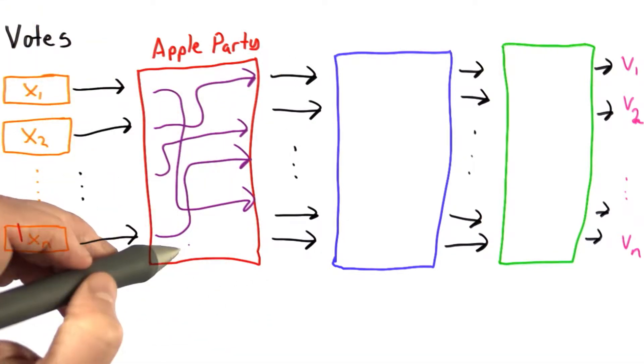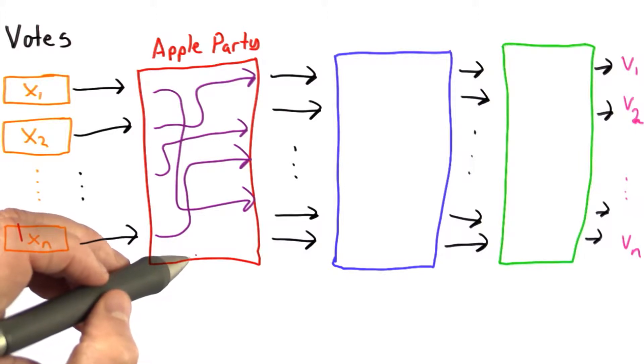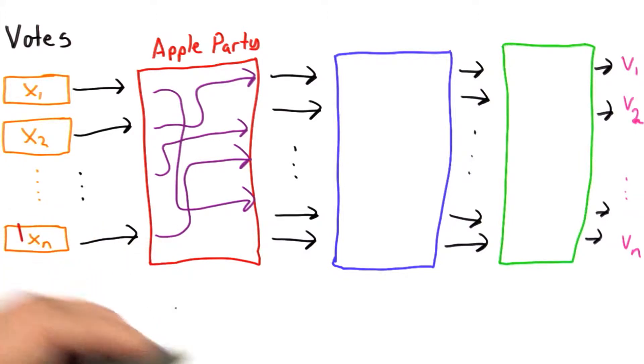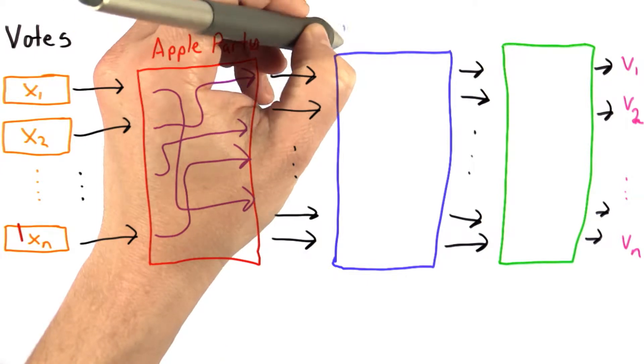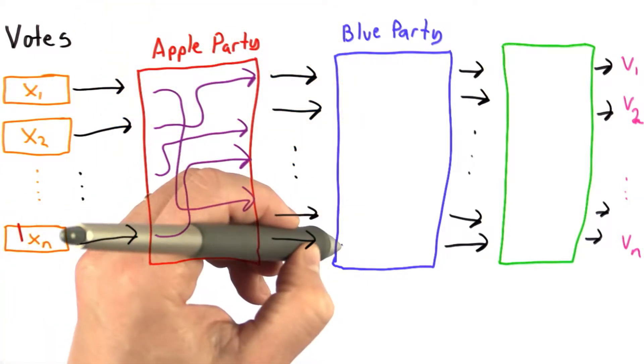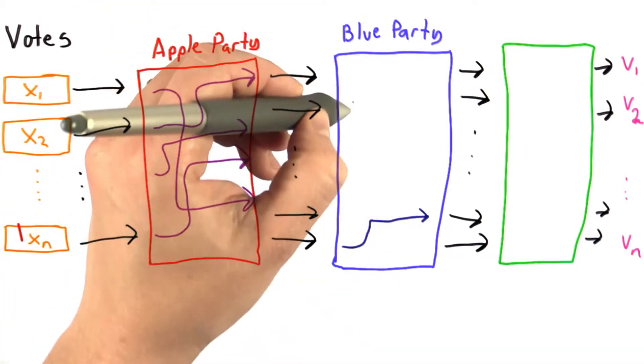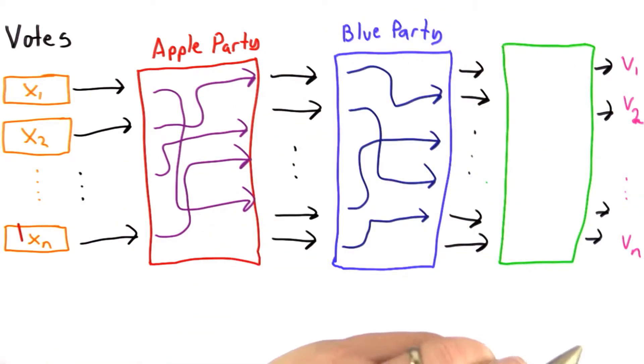We also do some encryption, and we'll get to that in the next question part. And those are passed along to the next party. Let's call that the blue party. The blue party also scrambles the votes in some random permutation.